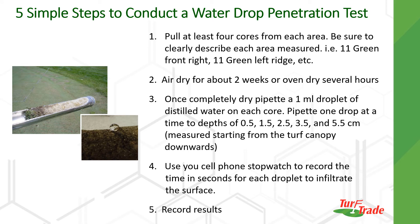Now here comes the fun part. Divide the area you're going to test into a grid, then pull at least four cores from each area of the grid. Once I pull the sample out, I pop it into a paper towel and roll it like a cigar, then put it into a plastic bag and label the bag. Be sure to clearly describe each area measured — for instance, 11 green, front right. However you label it, make sure it's easy to understand and remember where you took the sample from. Rolling it in a paper towel keeps the core intact, and when you get home or back to the office, you can unroll it and it's still intact onto your cookie sheet so it can dry.